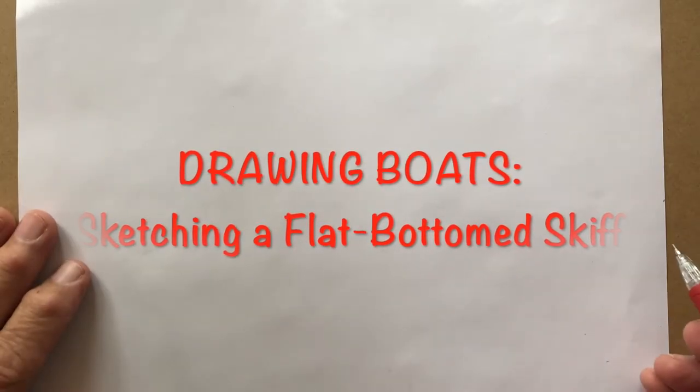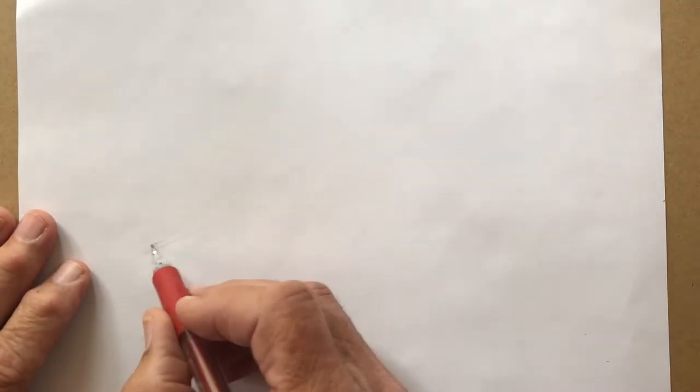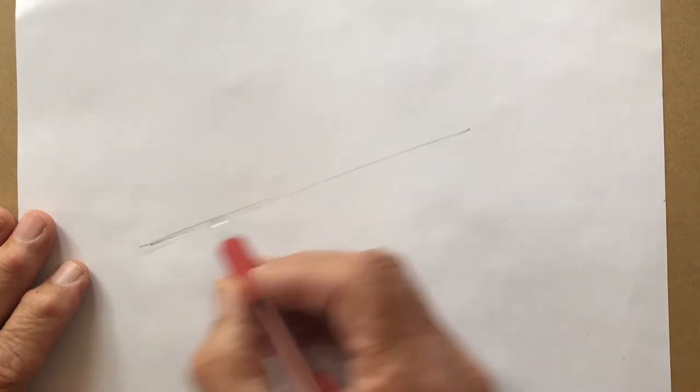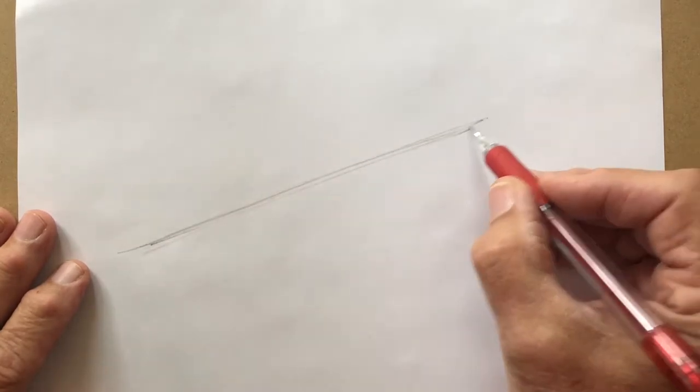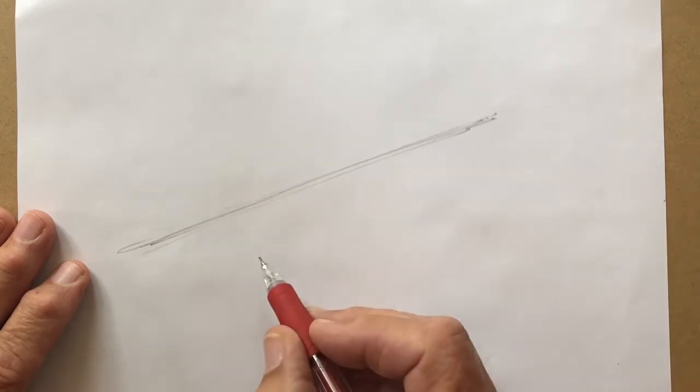To do a rapid sketch of any small boat, the first thing you really want to do is lay out the keel as a basic reference, something that you can measure everything else off of.